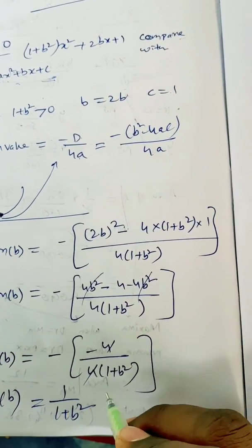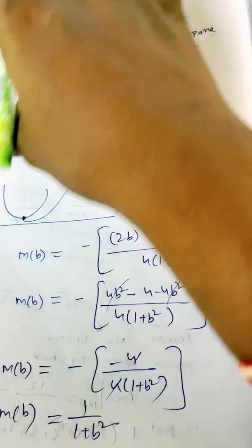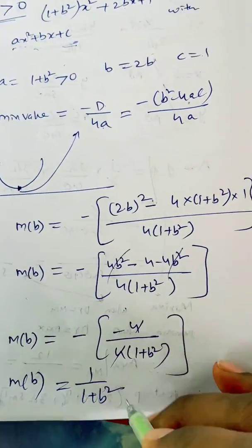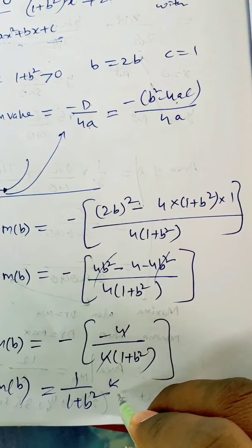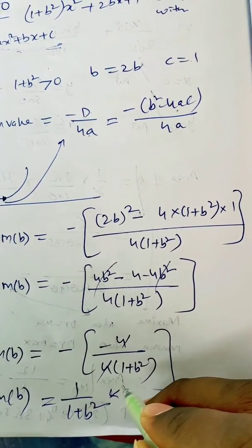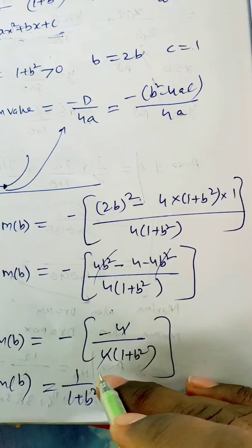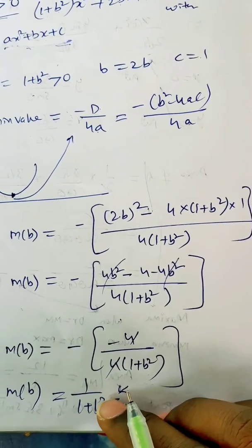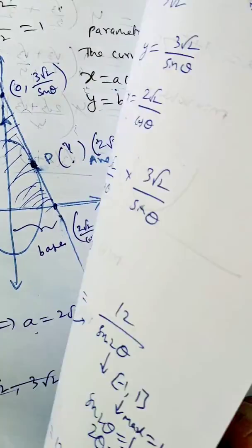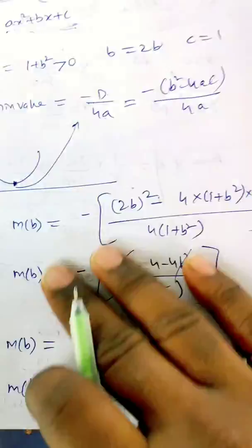You have to find minima and maxima of m(b). When you get minima of this, this is maxima. When you get maxima of this, you get minima. See, square numbers always... b² range will be how much?